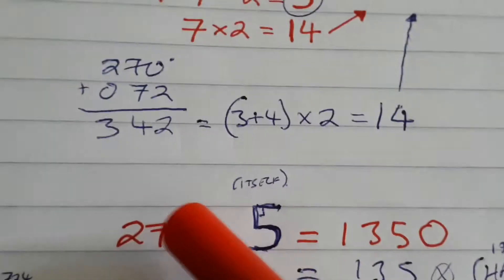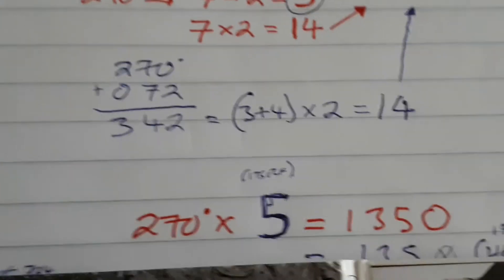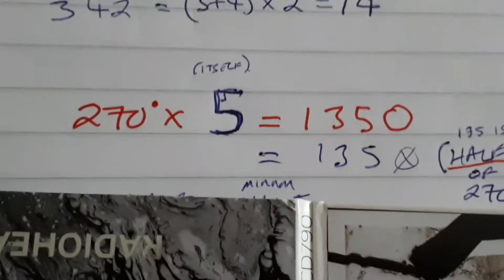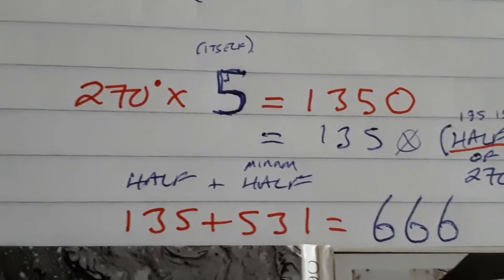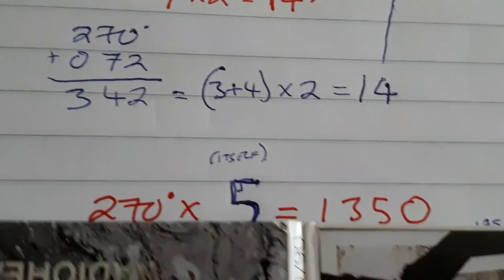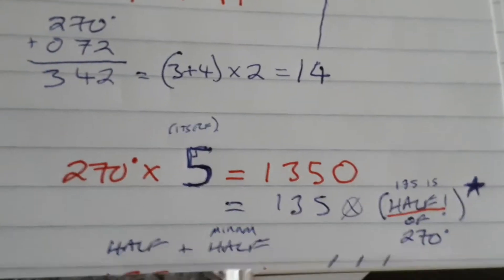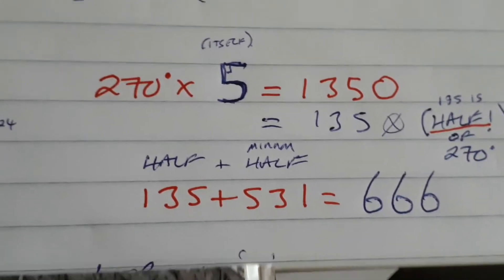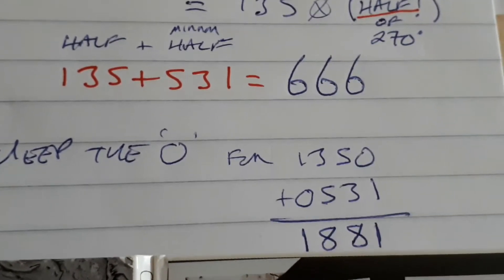Going back to the 270 degrees of a 5, times itself, of the 5, 1350. Let's lose the zero because it's half of 270: 135. Half plus the other mirror half, yeah, 666. Let's keep the zero, because that was the multiplication anyway. It would be silly to go with the half, because I didn't say divide by two. But I just thought it was obviously interesting that's there. Keeping the zero, 1350 plus the mirror 0531, 1881.